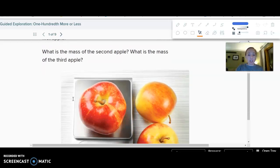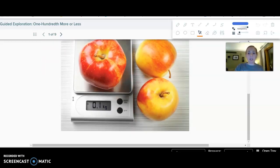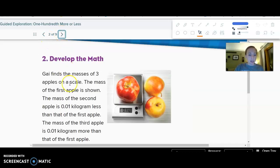So again, we're just comparing these different amounts. So we can see this first apple is one-tenth of a kilogram. So we need to find one-hundredth more and one-hundredth less than that.